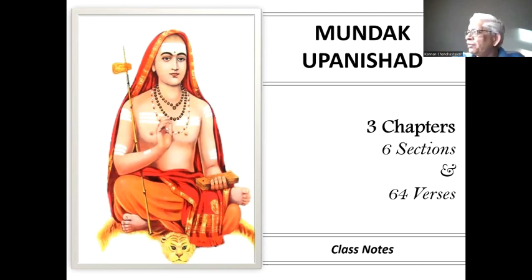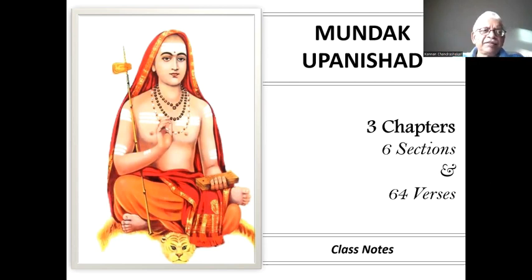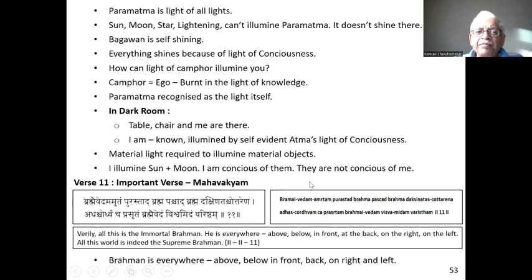This is a very beautiful, very structured Upanishad — three chapters, six sections, 64 verses total. The Upanishad reveals that higher nature which cannot be seen, but a person who goes through it will understand the truth. With this introduction, I'll go straight to the mantra we are studying today, starting with mantra number 11.